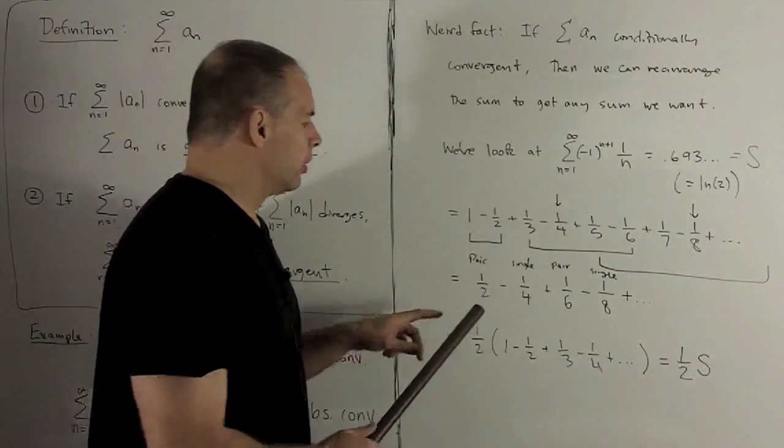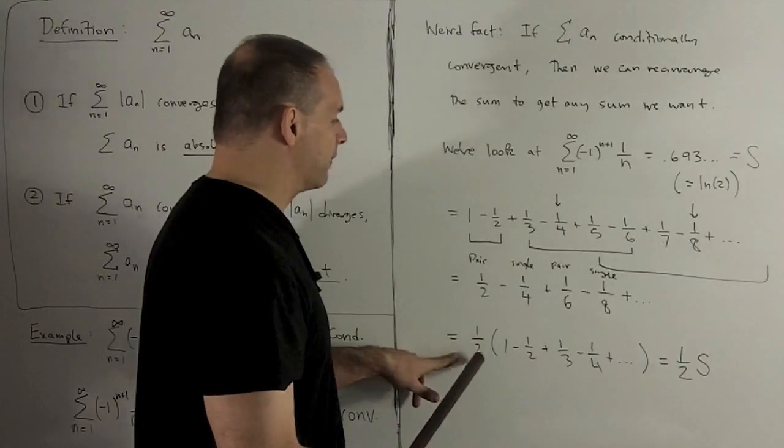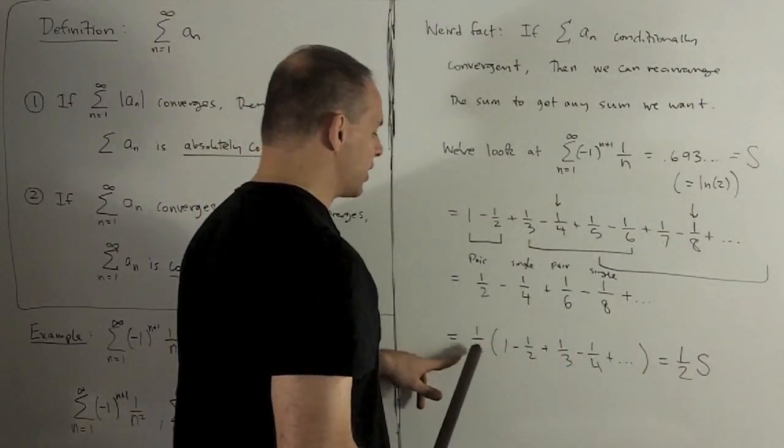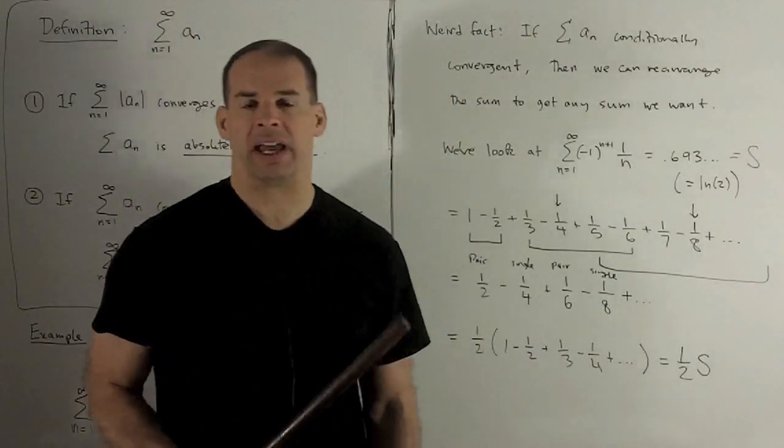So what have I done? Well, I could factor a one-half out of this, and that's going to be one-half times my original series. So the sum for this is going to be just one-half s. Definitely not equal to s.